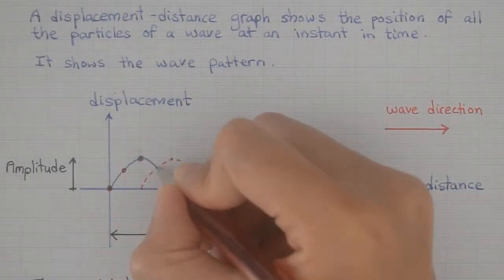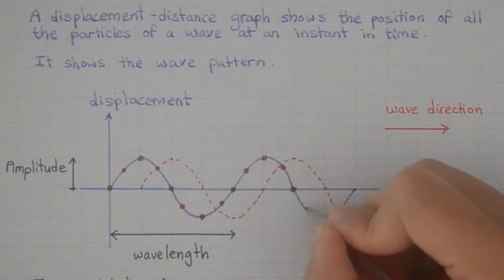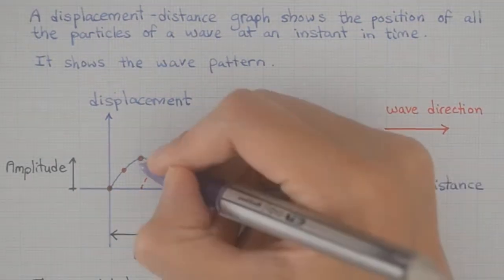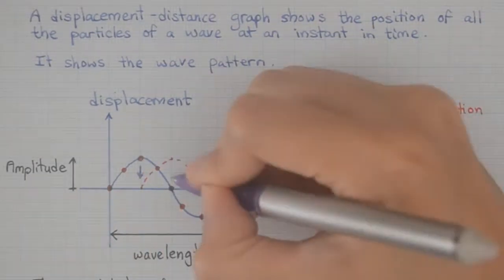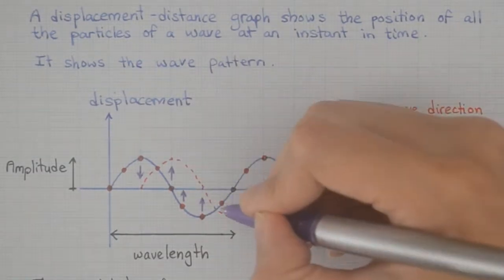With the dotted line drawn, I can now predict where all the individual particles are going to be after these 2 seconds. Remember, they can only move vertically up or down. So each particle is either going to move up or down to match up with the dotted line.